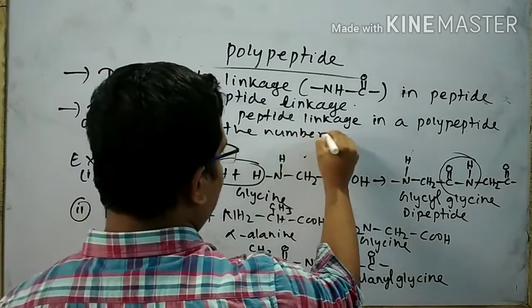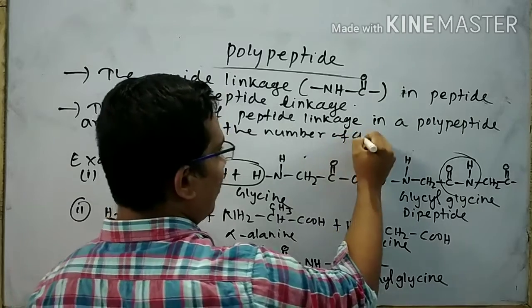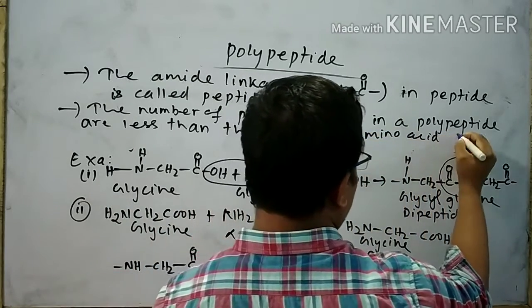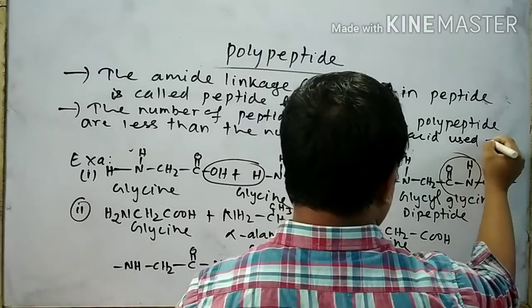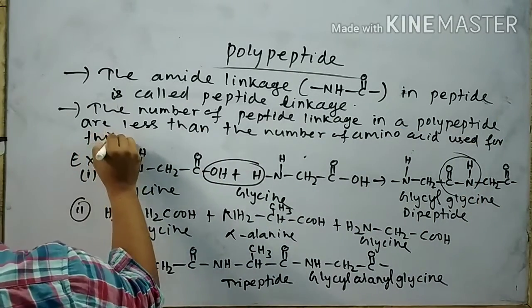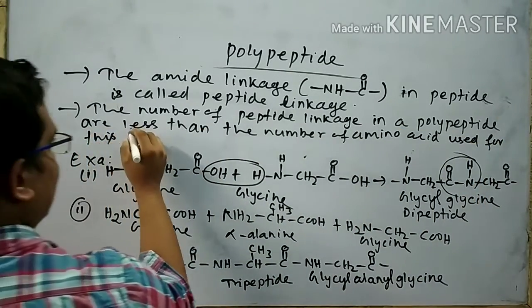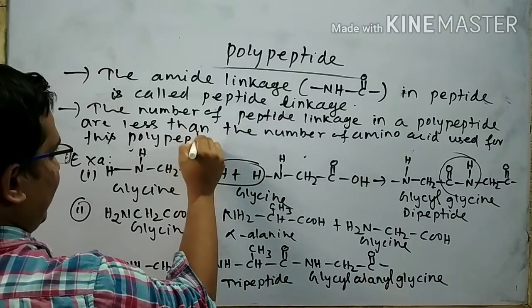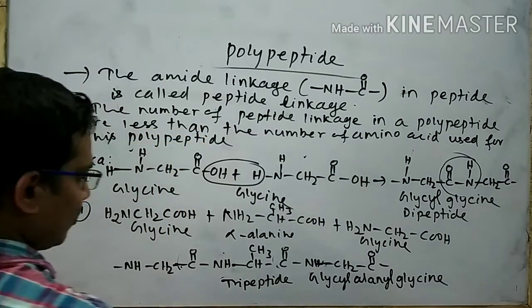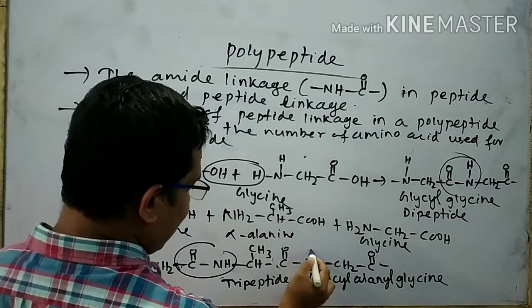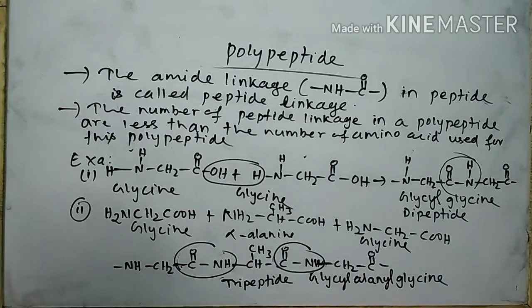Here we can write an important point: the amide linkage — that is the bond N with a double bond O — in a peptide is called peptide linkage.